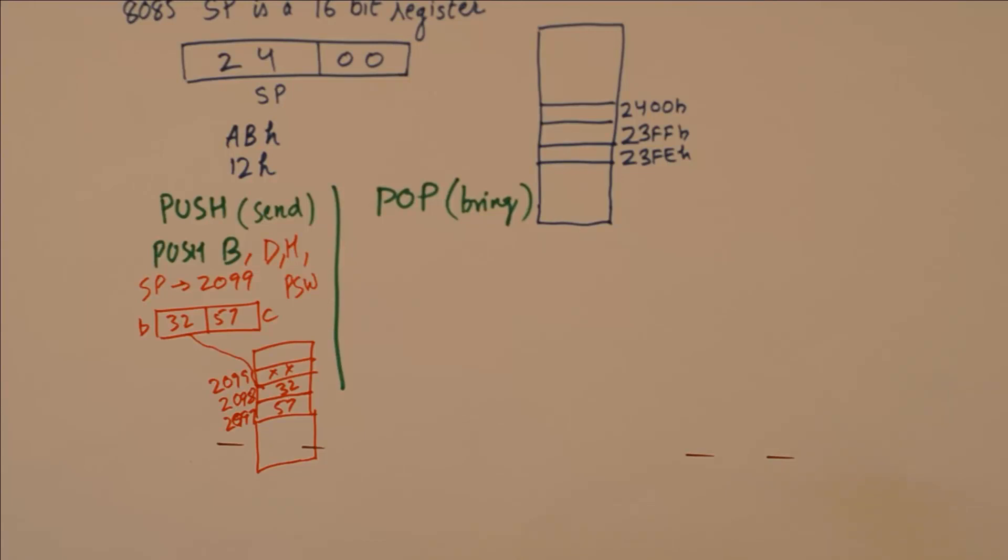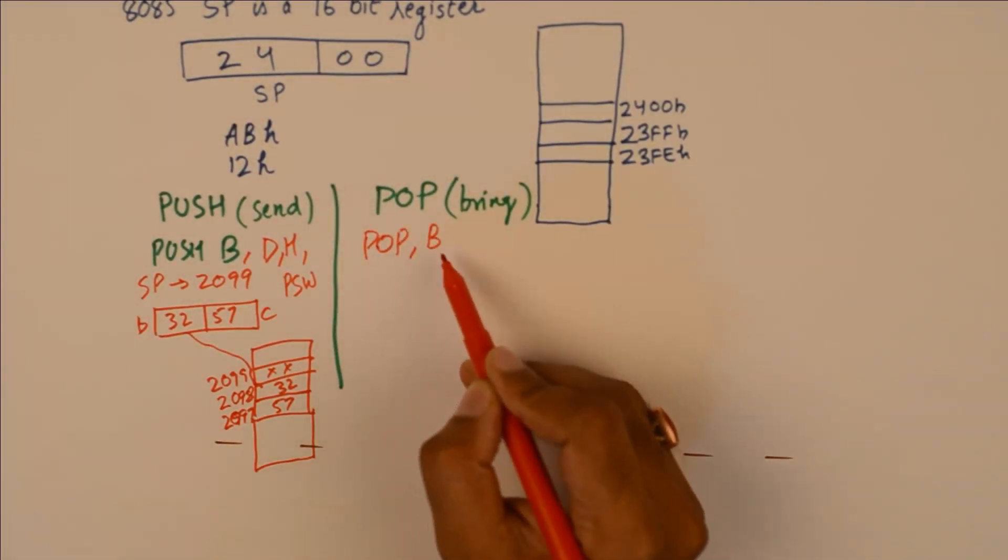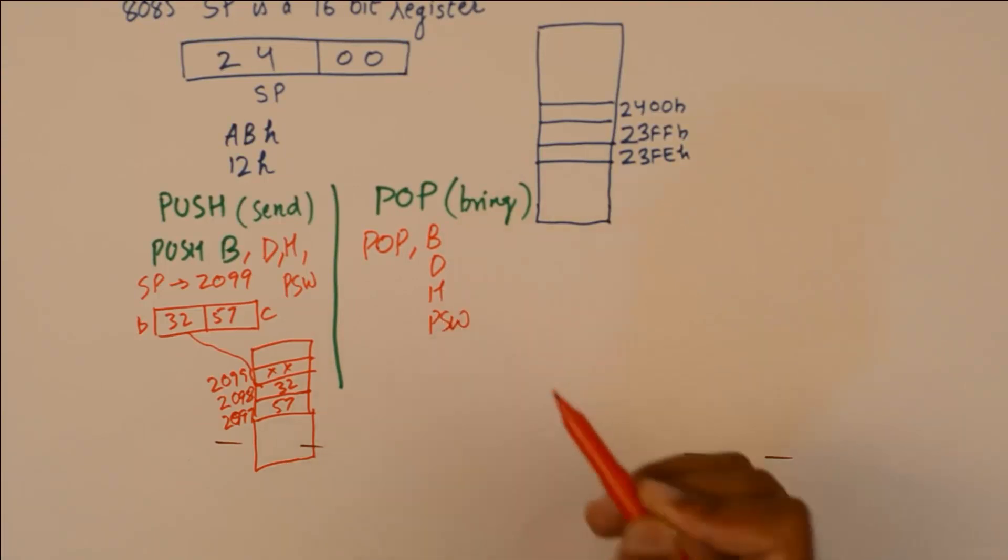And then we have the pop instruction which is exactly the reverse of push instruction. We have options pop B, D, H and PSW. So it will do the opposite of that. If I write down pop H it will bring 2 bytes from the top of the stack and it will store it into the HL register pair.